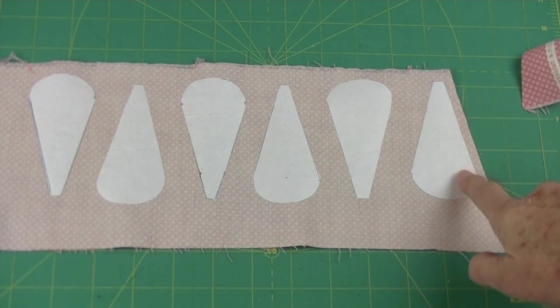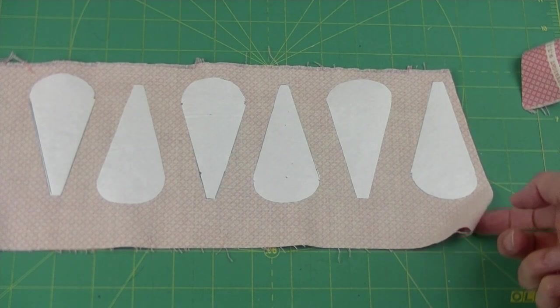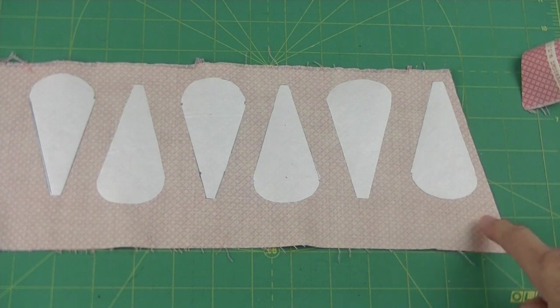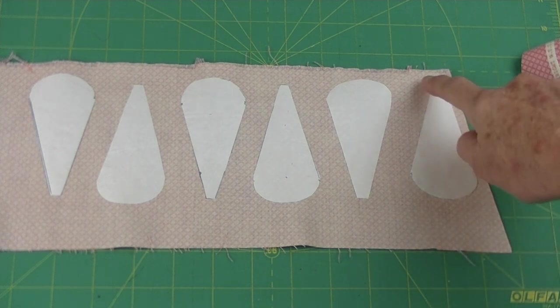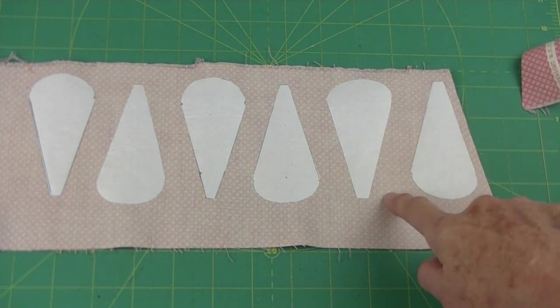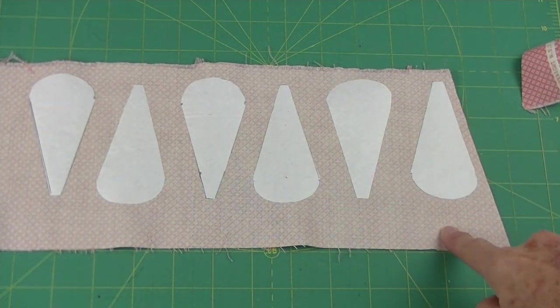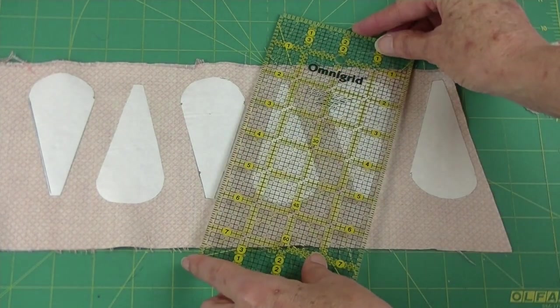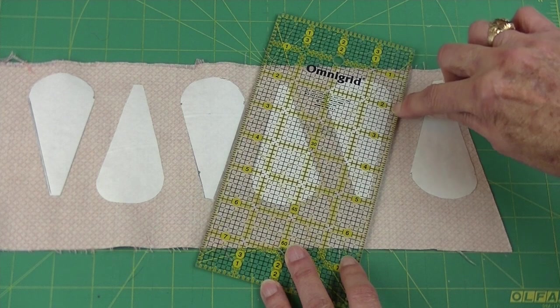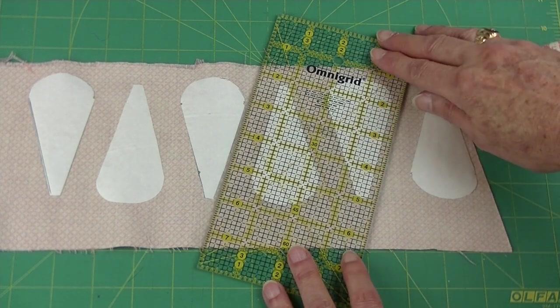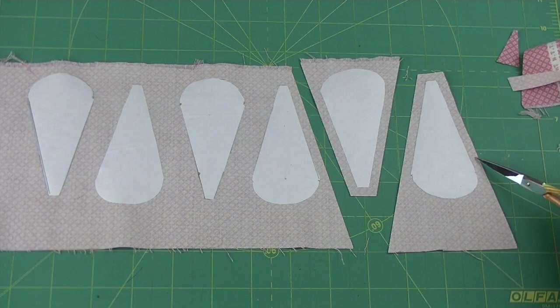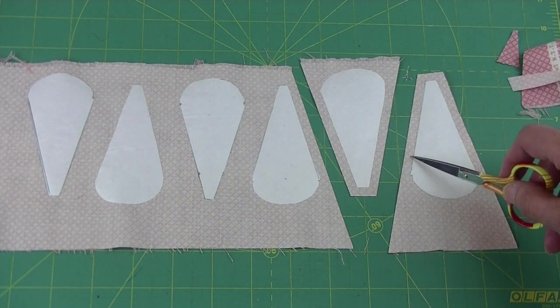I press the petals with the shiny side down on the back of my fabric. Making sure to leave at least a quarter inch seam allowance all the way around each petal. Take your rotary ruler and line up the quarter inch line on the edge of your petal. And cut. Cut a quarter inch over for these three sides.